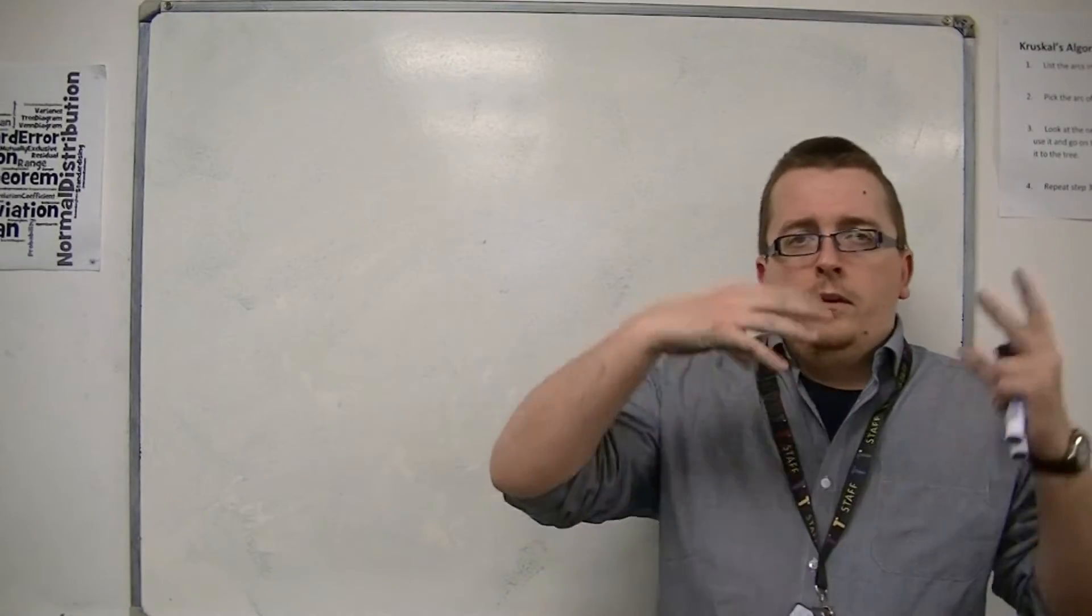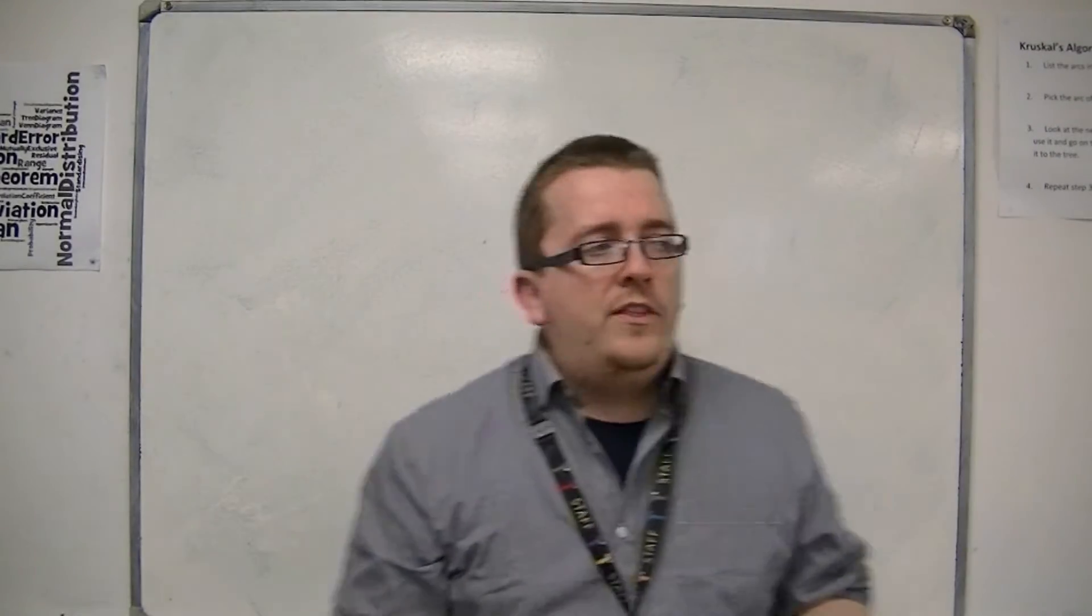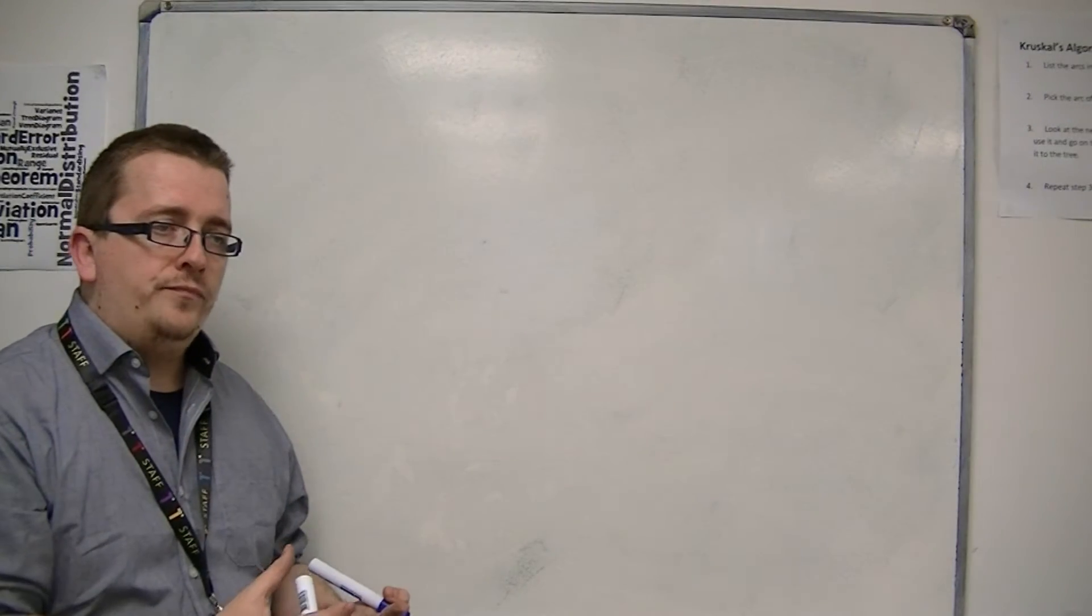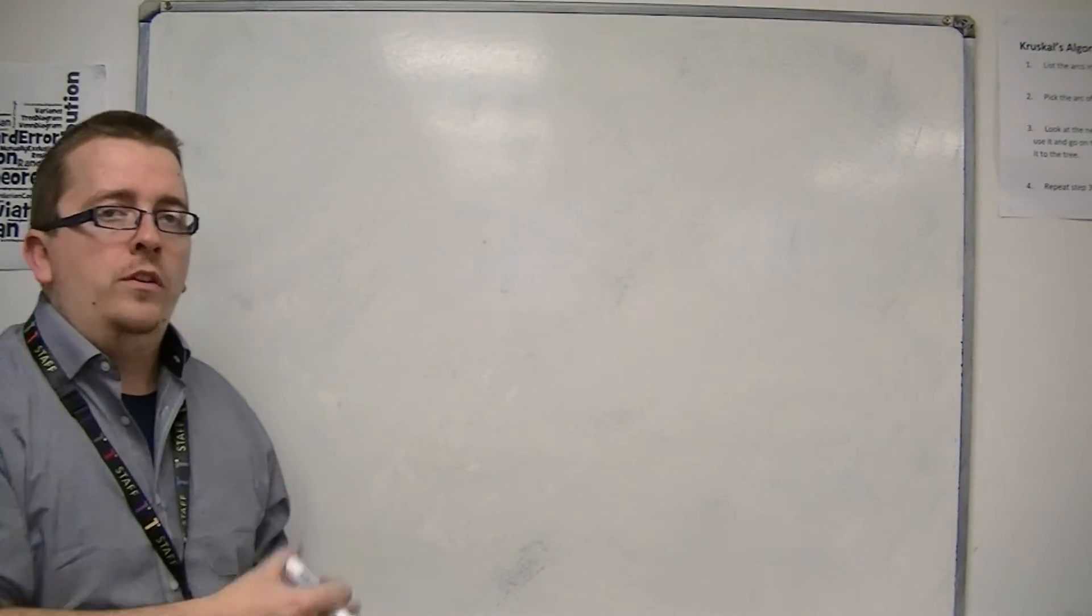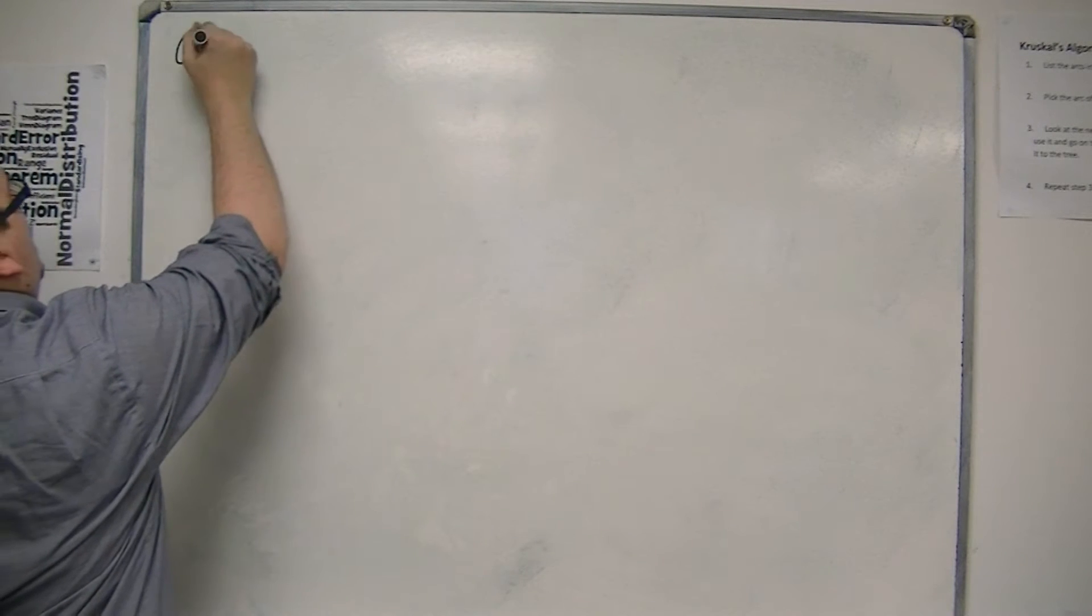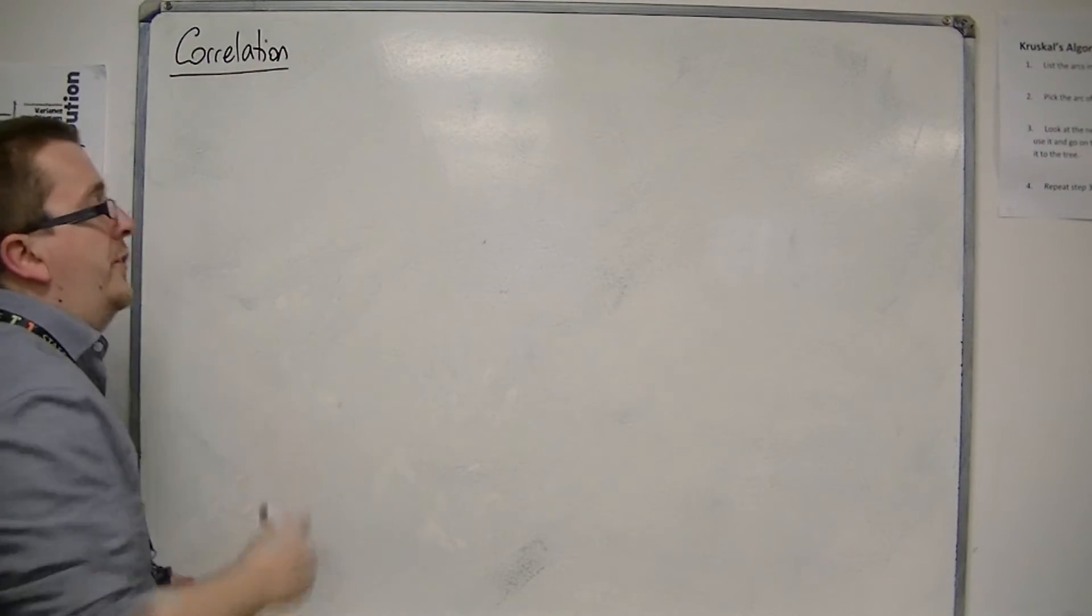So all of these, the fact that you're looking at two sets of data and then seeing if there is any connection between the two. And that connection we refer to as correlation. So correlation is a big part of what we're doing when we're considering scatter graphs.